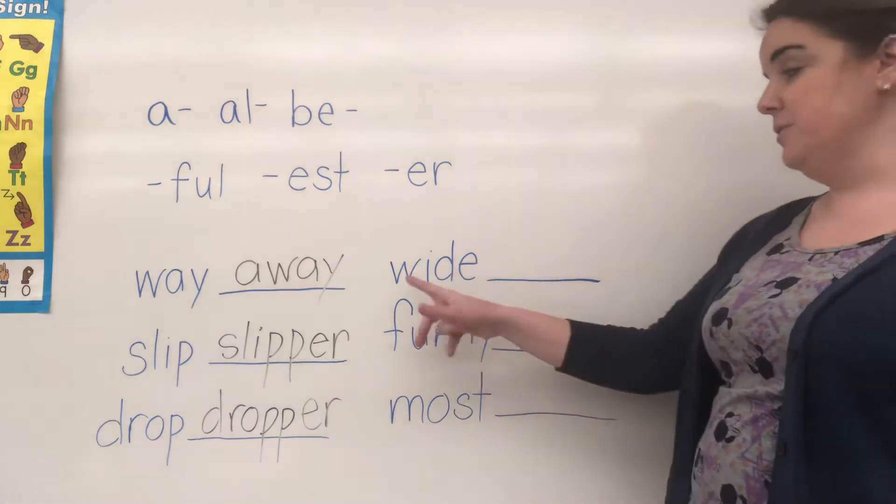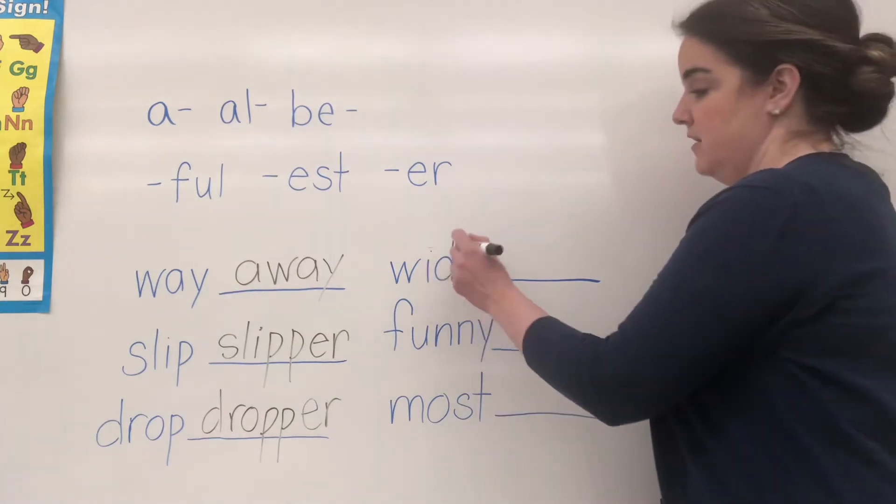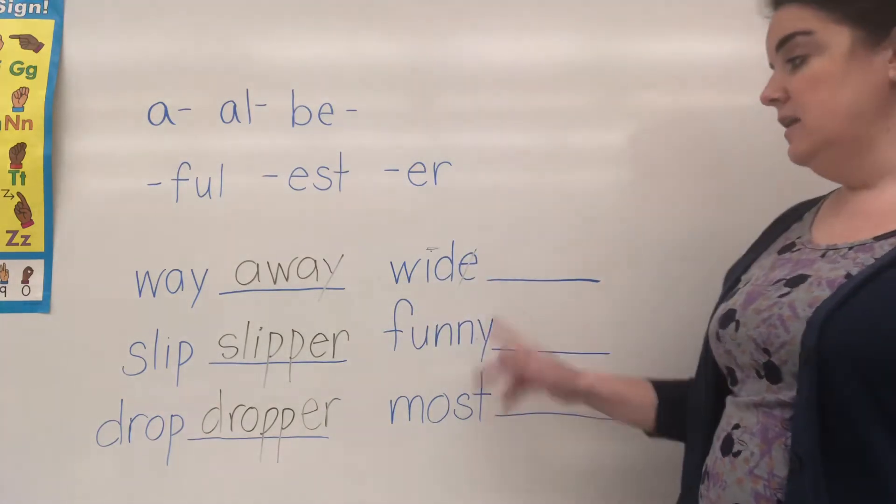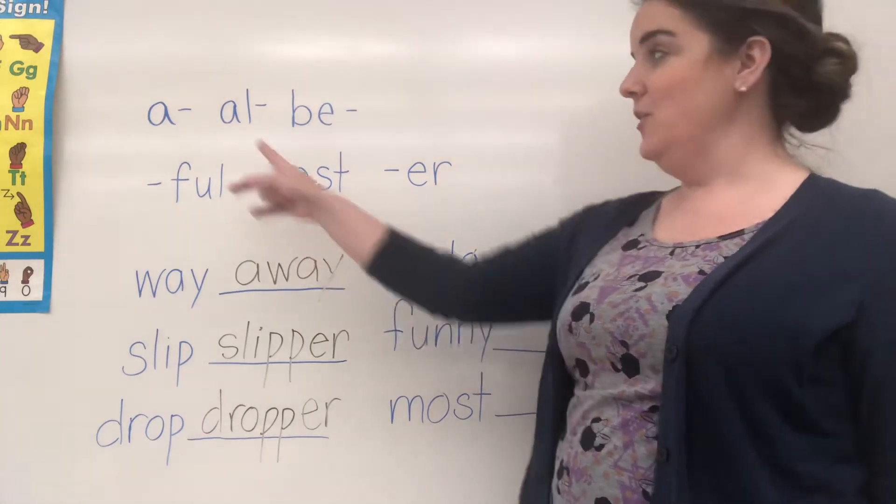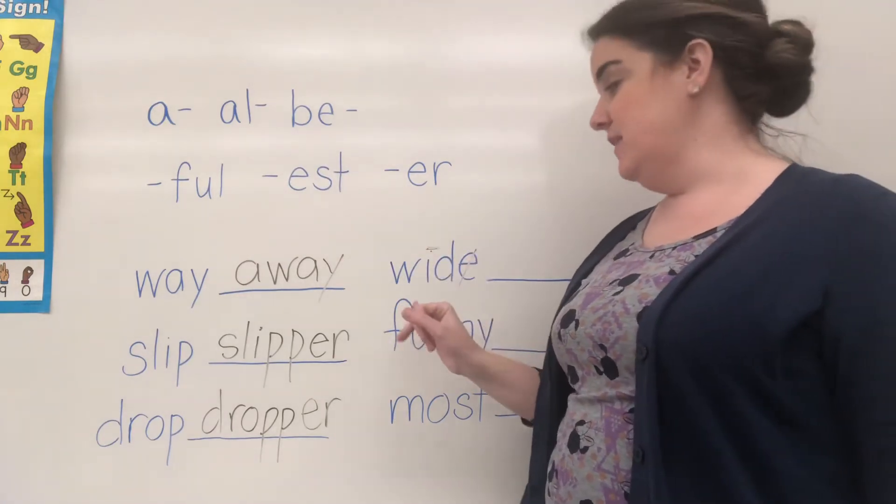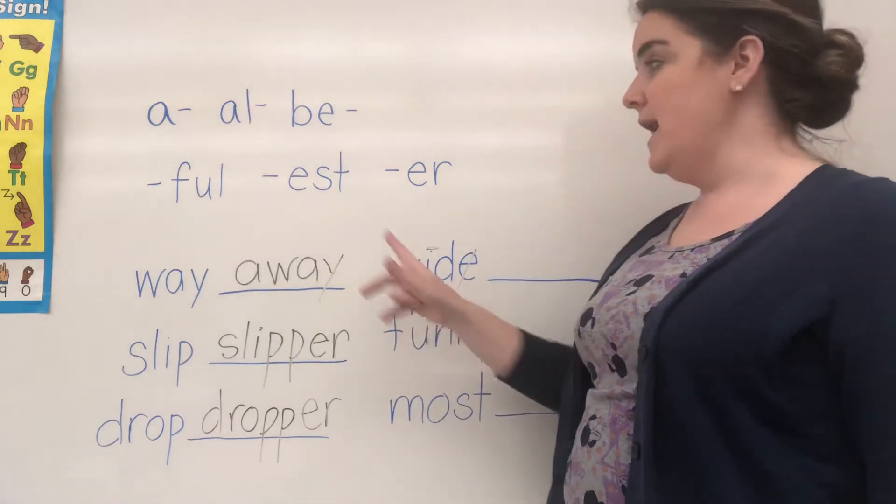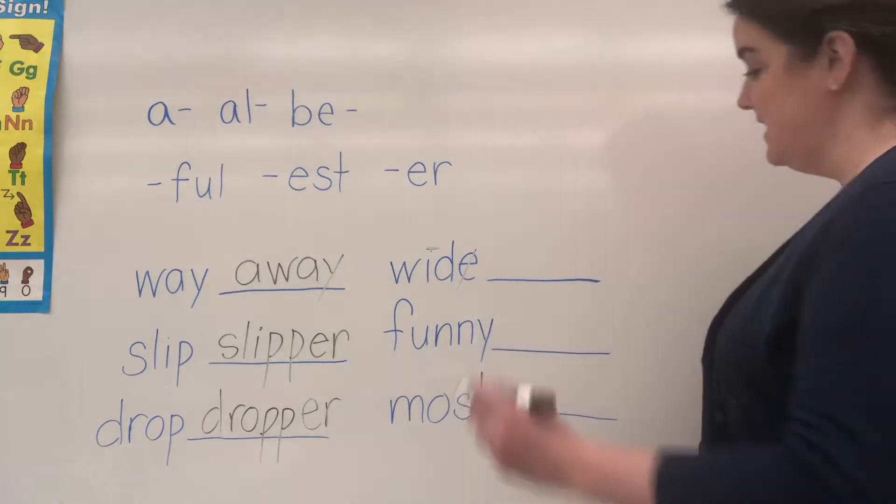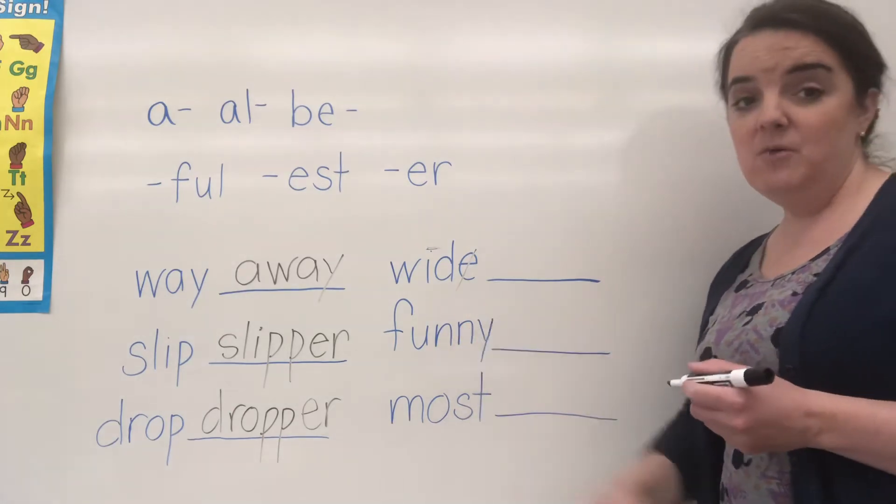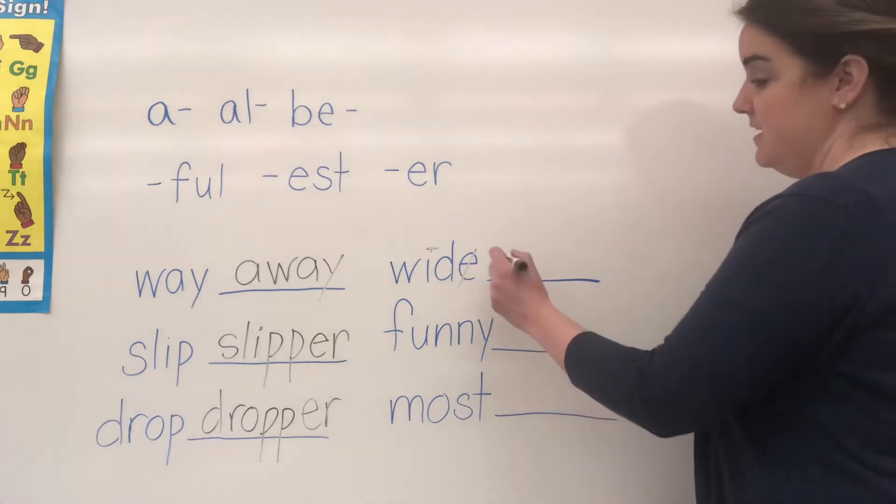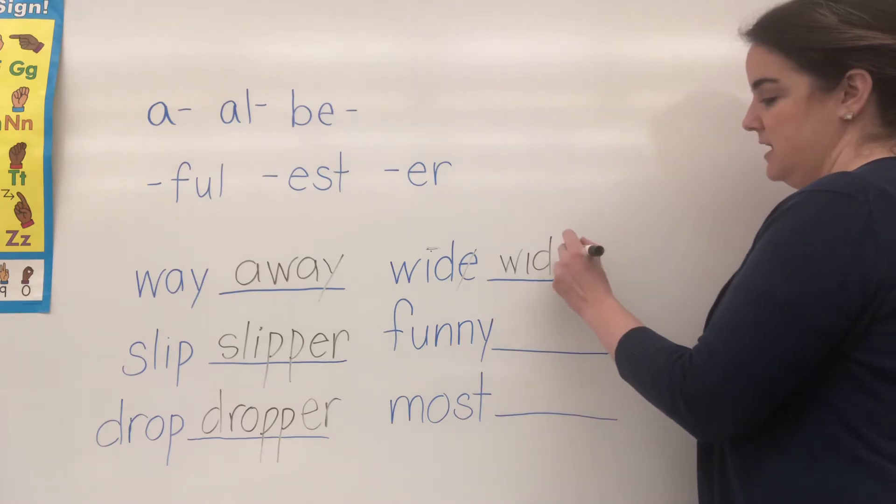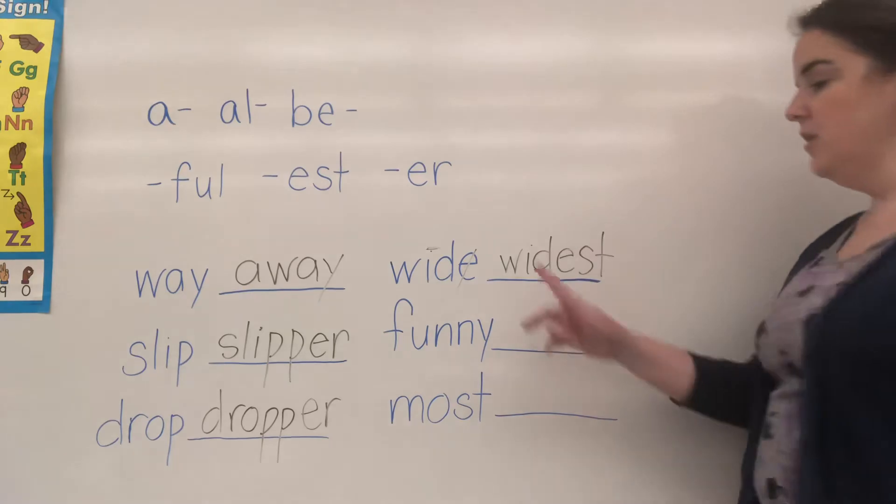Okay, now let's go to these three words. This word has two vowels, so the first is long and the second is silent: wide. Let's try a prefix. A-wide, all-wide, be-wide? No. Let's try a suffix. Wideful? No. Widest—yes. So this ends with a vowel. If a word ends with a vowel, we drop the E and add the suffix. So W-I-D-E-S-T to make widest.